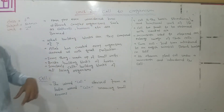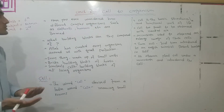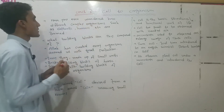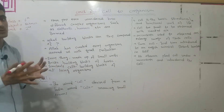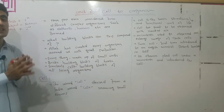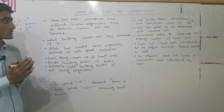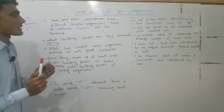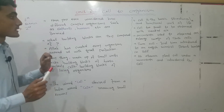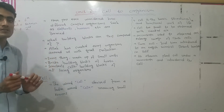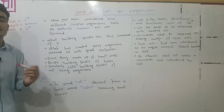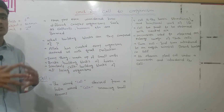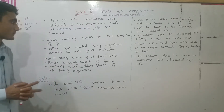How are different complex organisms — for example, elephants, human beings, multicellular organisms — formed? What building blocks are they composed of? These units combine to form such organisms.